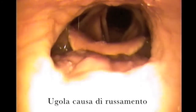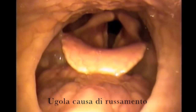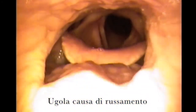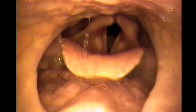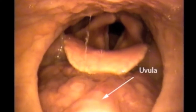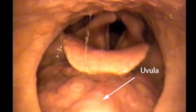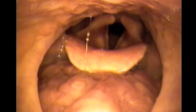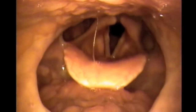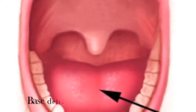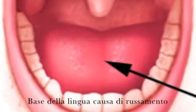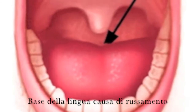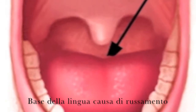Here is what a vibrating uvula causing a snore looks like from the inside. Beyond the uvula, the tongue itself or even the back of the tongue can also vibrate causing a snore.